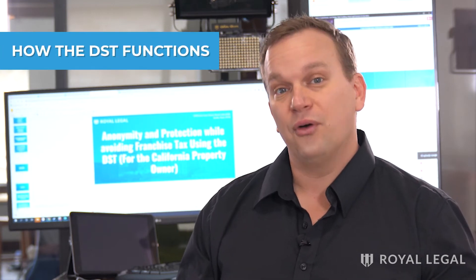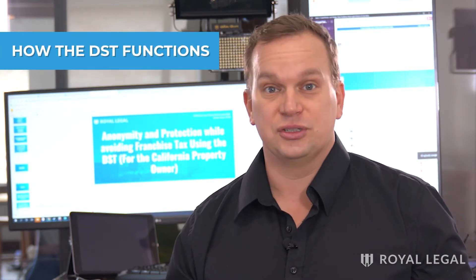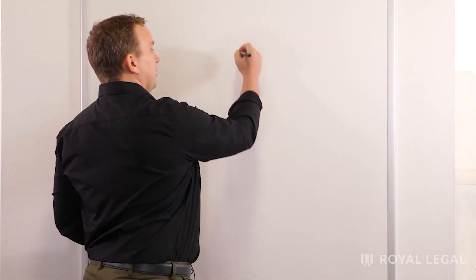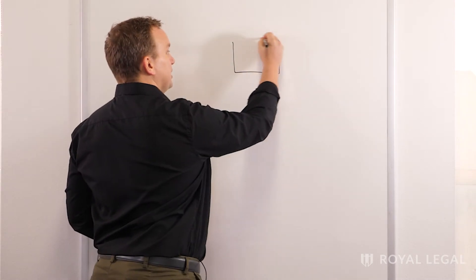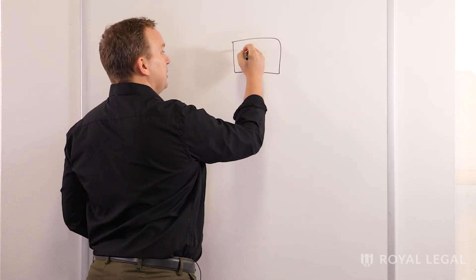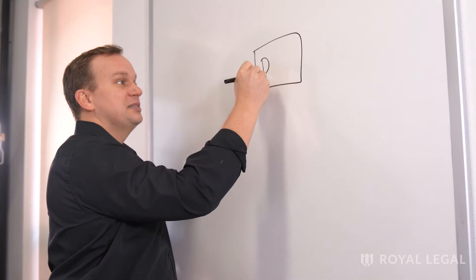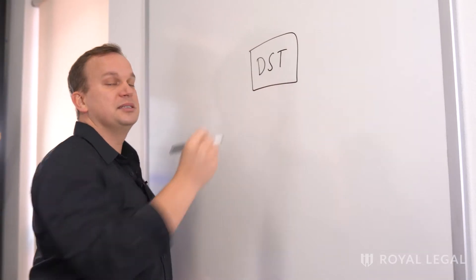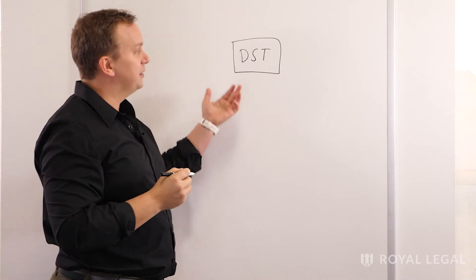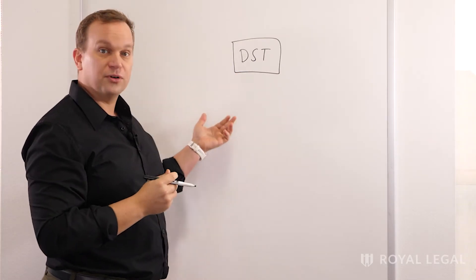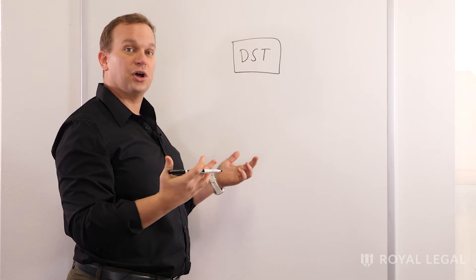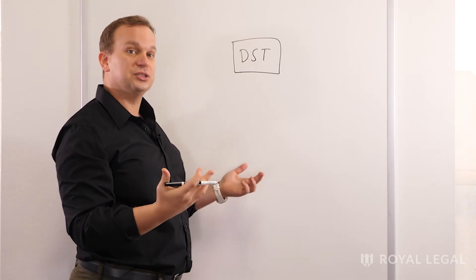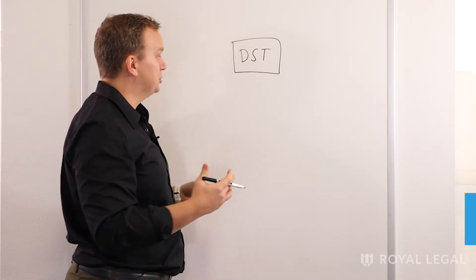So let's take a look at how the DST actually functions. With the DST, you end up filing one trust in the state of Delaware — this is going to be a single filing. It's an anonymous filing created through a law firm, so it has the highest levels of anonymity possible because it's all protected by the attorney-client privilege.